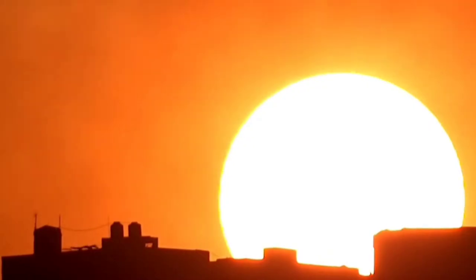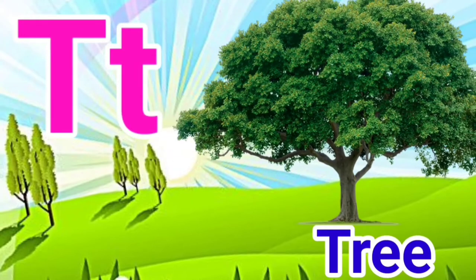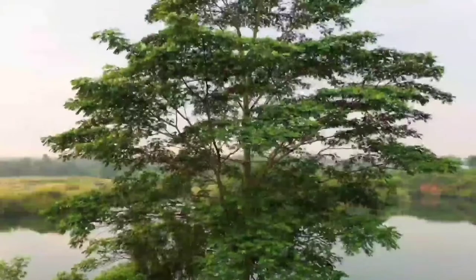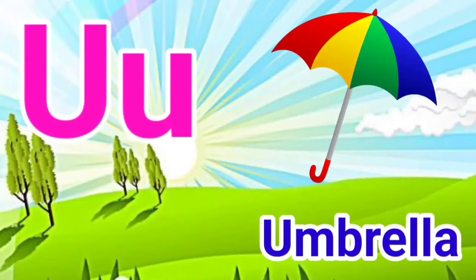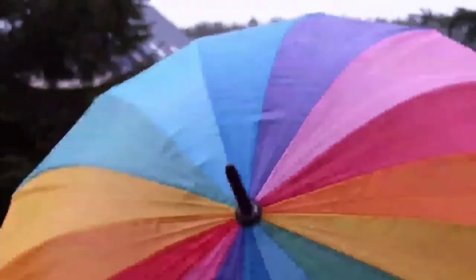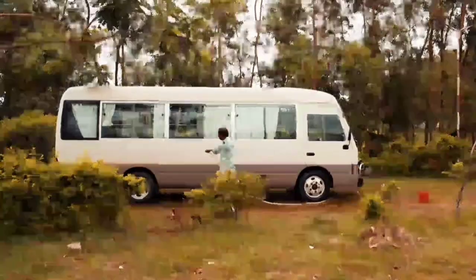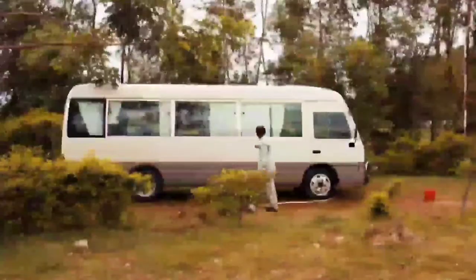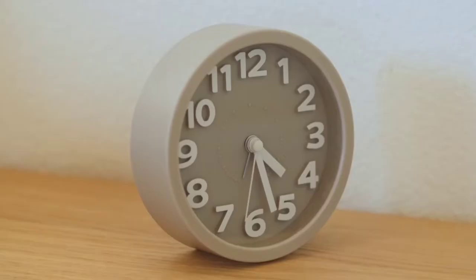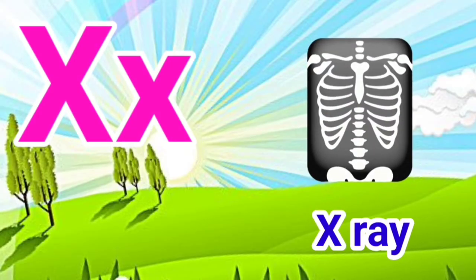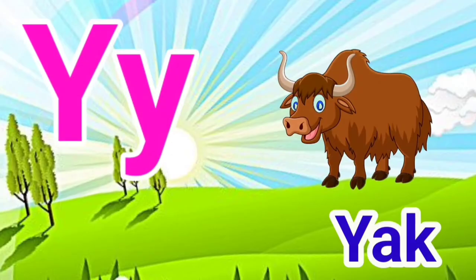S for Sun, T for Tree, U for Umbrella, V for Van, W for Watch, X for X-Ray.